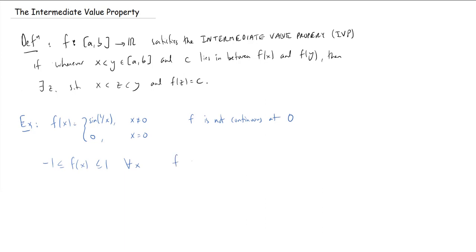And we know that it takes on all the values between negative one and one in any interval around zero. So f satisfies the intermediate value property, even though it is not continuous. So this tells us that the converse to the intermediate value theorem does not hold.